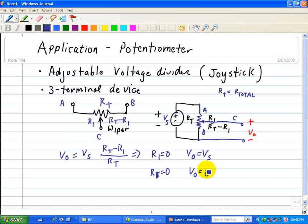So those are the extreme points. Now if we're in the middle, where the wiper is in the middle, exactly the middle between nodes A and B,